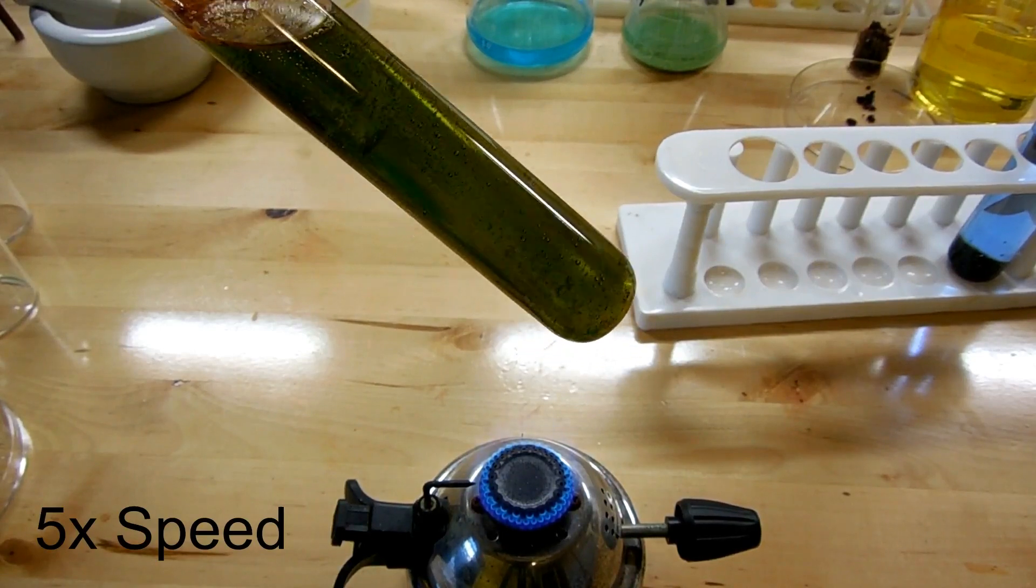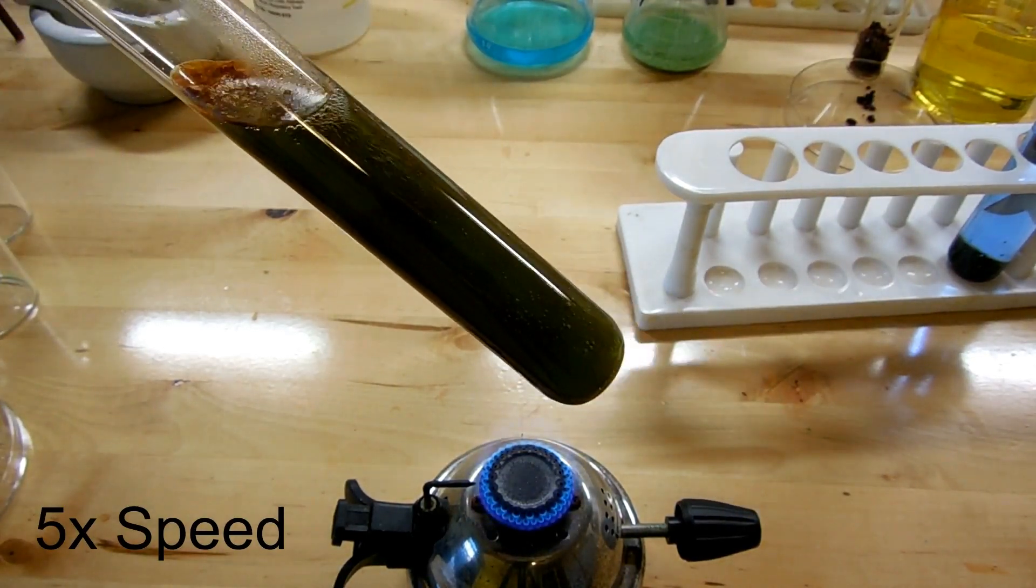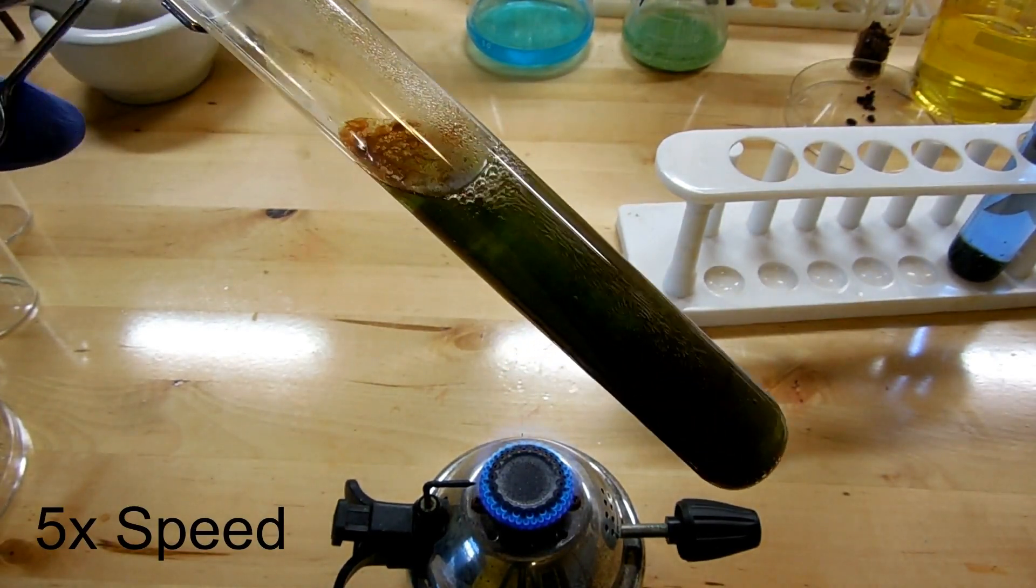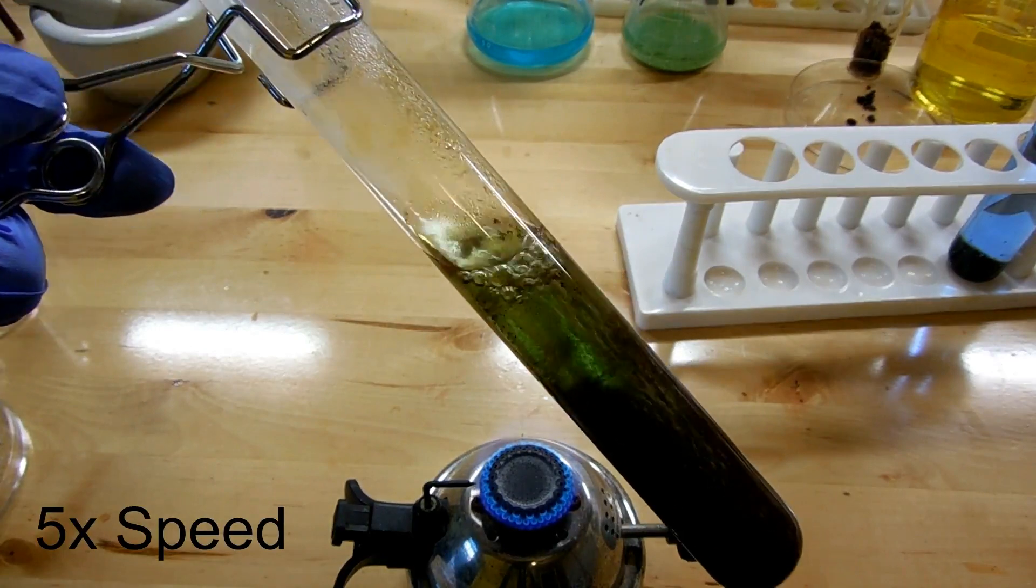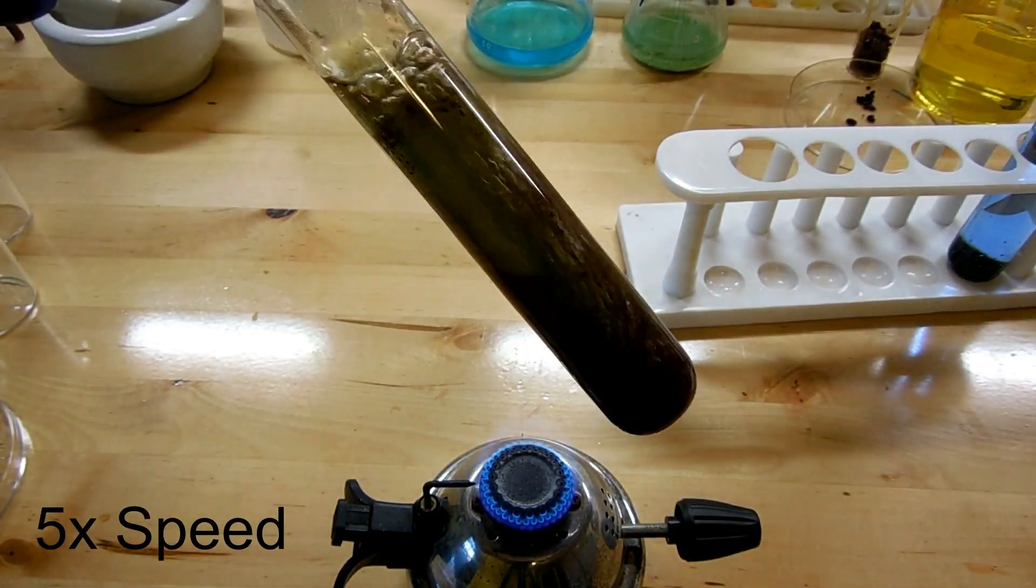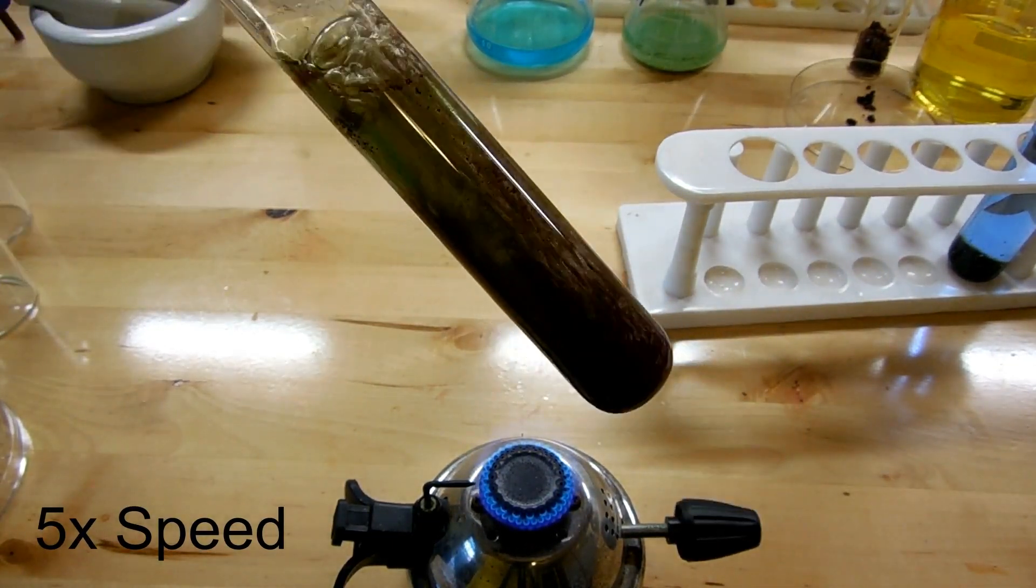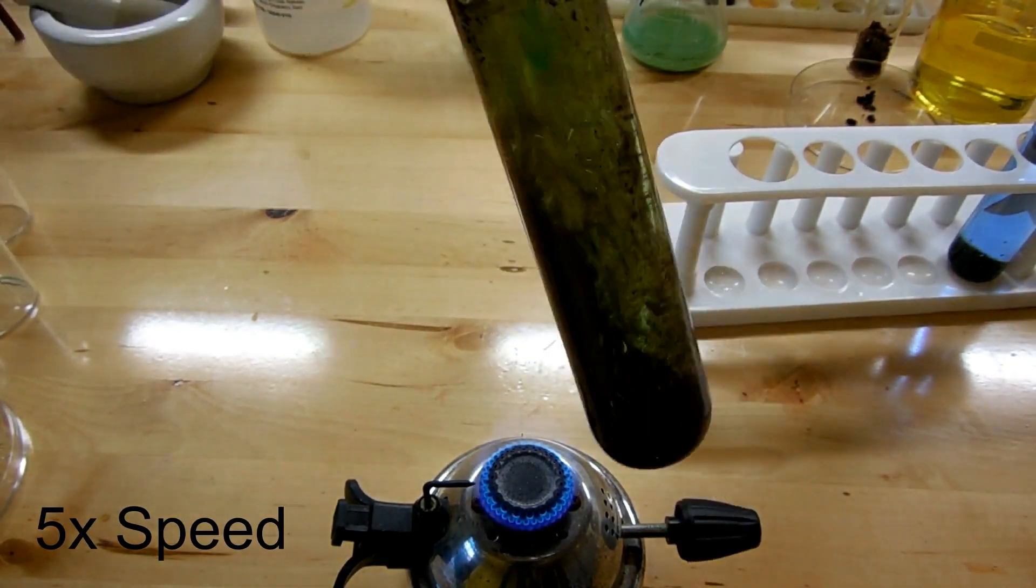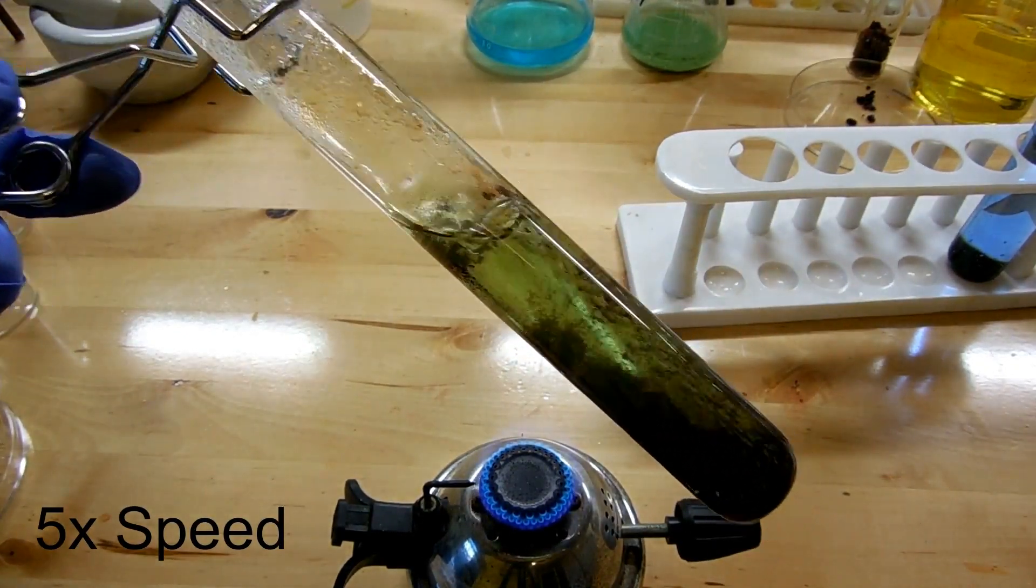As we're boiling this solution we're getting the Chevreul's salt to precipitate as a brick red solid. Now red colors are very rare for copper compounds. There's really only one other one that I know of that is red and that's copper one oxide. So you can see as we heat this we get a very dense crystalline precipitate that falls right to the bottom of the test tube. So it's really easy to recover this in the end.